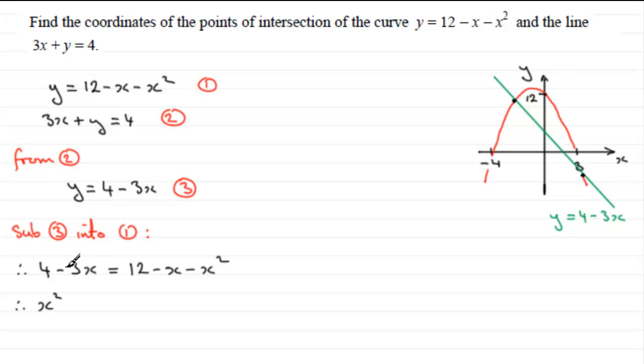We have the x term next, minus 3x, and then I'm going to add x. So that's going to be minus 2x. And then we've got the constant here, 4. And then I'm going to subtract 12 from both sides. So 4 take away 12 is minus 8. And that equals 0.